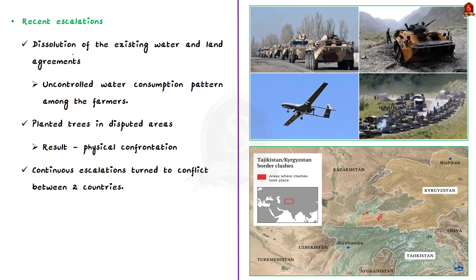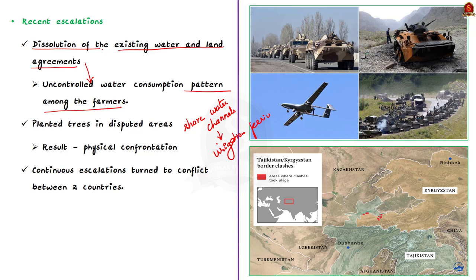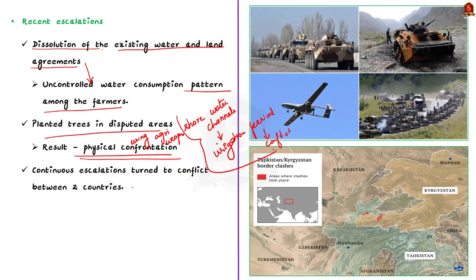Regarding recent escalations — the dissolution of existing water and land agreements between the two countries led to uncontrolled water consumption patterns among farmers. Both countries share multiple water channels, so every year during the crucial irrigation period, small-scale conflicts continued to happen. A group of people from either side planted trees in a disputed area and engaged in physical confrontation using agricultural equipment as weapons. These continuous escalations turned into a large-scale conflict, making both countries deploy troops and military equipment. Ultimately, land and water are the main problems driving recent escalations between Kyrgyzstan and Tajikistan.